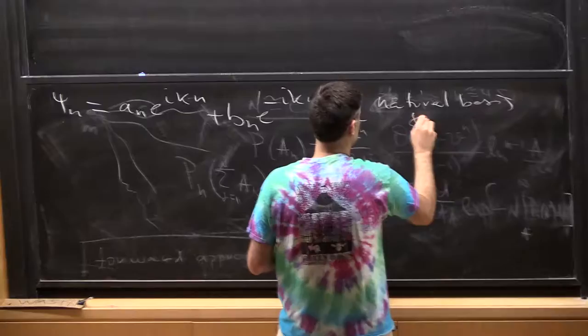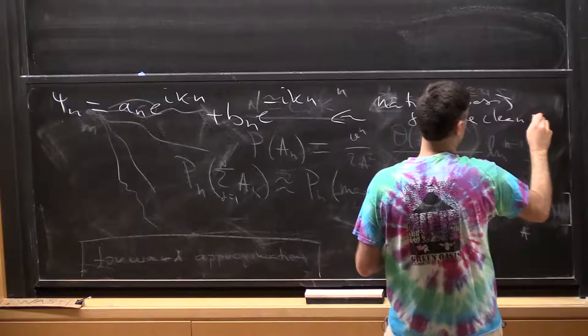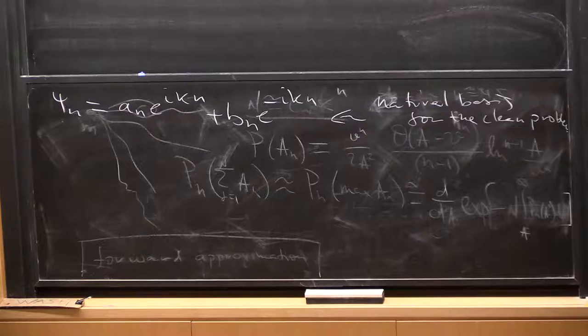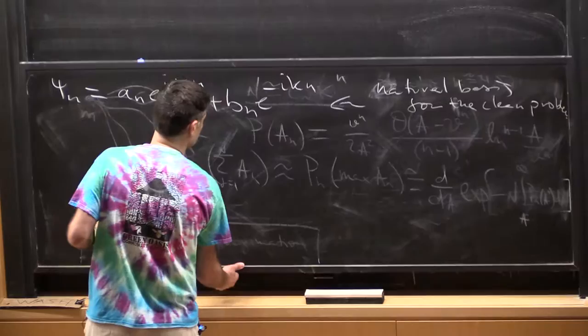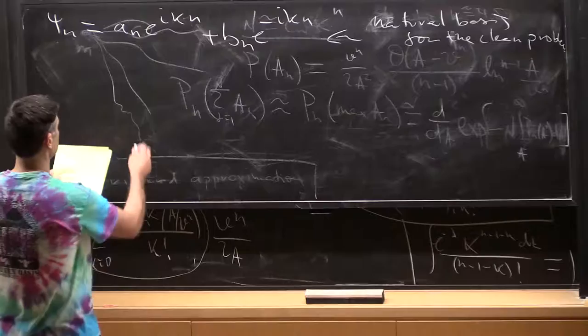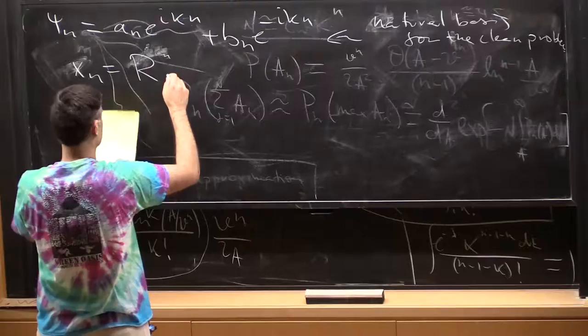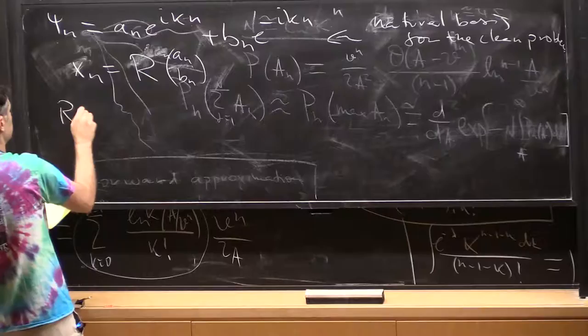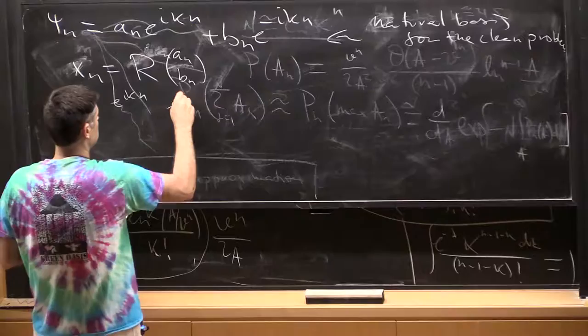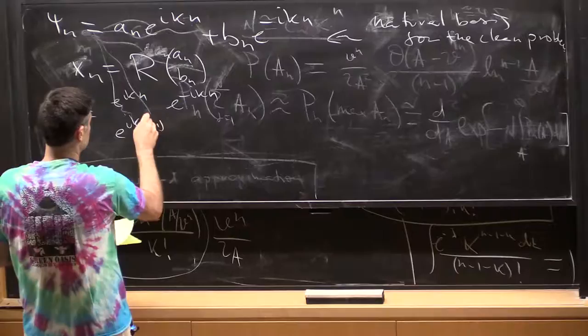Natural basis for the clean problem. And I would like to make a basis choice so that when epsilon, when all epsilon are zero or uniform, that the problem becomes trivial. So to implement this, I want to write my x_n as e to the i k_n, well, some rotation matrix, we'll write a_n, b_n, and you can figure out that the rotation matrix is e to the i k_n minus i k_n e to the...